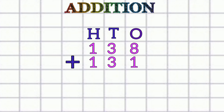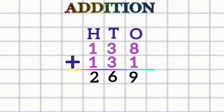Next question: 138 plus 131. Sum of ones: eight plus one equals nine. Sum of tens: three plus three equals six. Sum of hundreds: one plus one equals two. So our answer is two hundred sixty-nine.